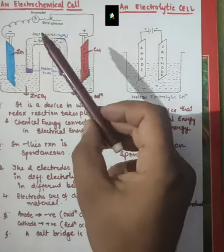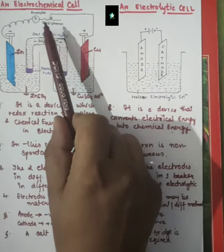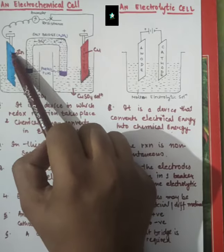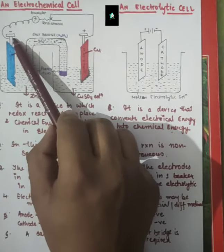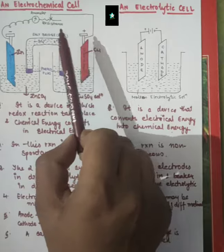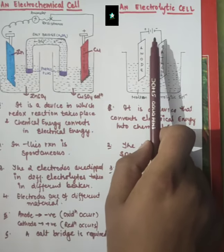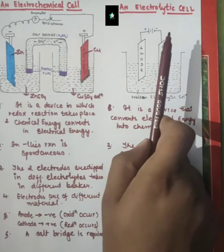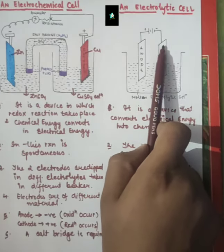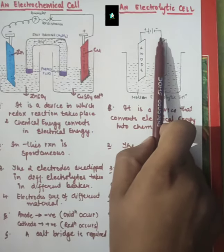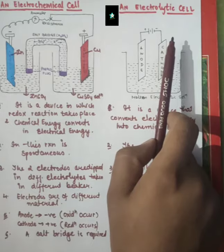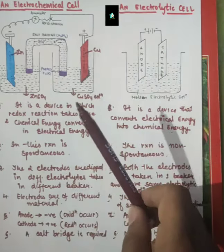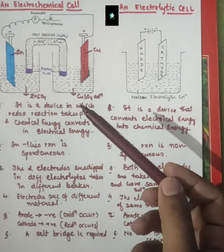Another point: in the electrochemical cell, the flow of electrons is from anode to cathode, because oxidation occurs at the anode and electrons are released. In the electrolytic cell, electrons are supplied by the battery — they enter from the cathode and come out from the anode. These are the key differences between the electrochemical cell and the electrolytic cell.